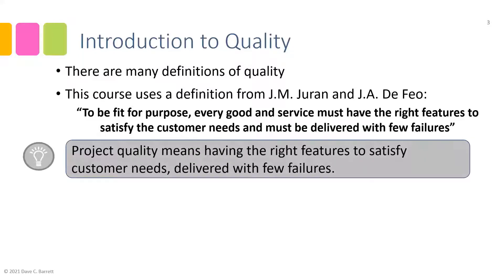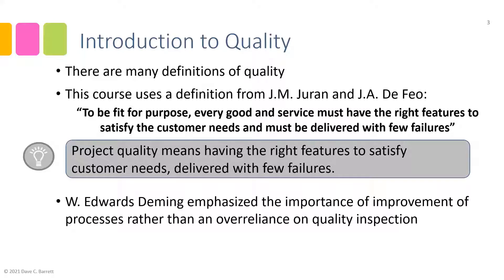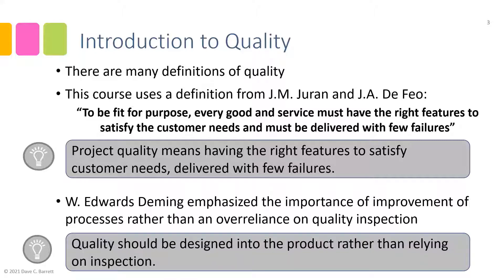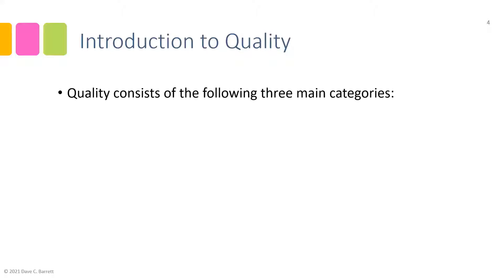Quality pioneer W. Edwards Deming emphasized the importance of the improvement of processes rather than an over-reliance on quality inspection. While we do need to inspect and verify that our product, service, or result is delivered with few failures, Deming's key idea was that we should improve processes to ensure that whatever we do is done reliably, rather than just relying on checking what comes out at the end. Quality should be designed into the product rather than relying on inspection.